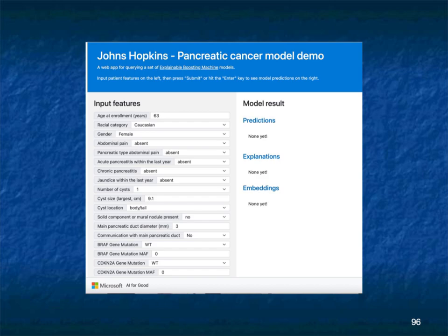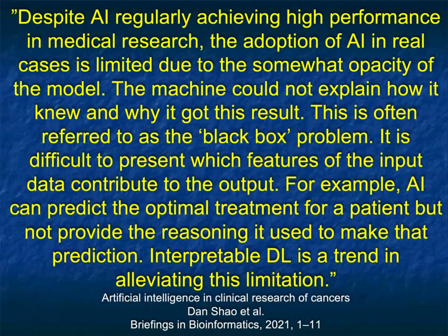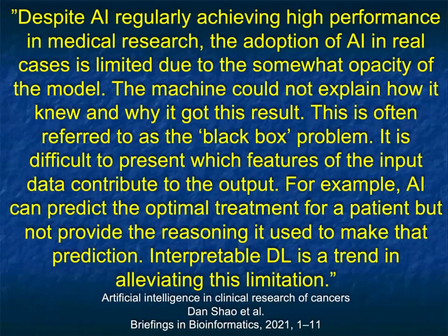Looking at fluid, we will be able to be more and more accurate — it's very exciting. We're looking at this and hopefully it will be the next step, building on the radiomics, building on the AI. This glass box technique — EBMs — may be the next great step in allowing us to really put AI into clinical practice. Despite AI regularly achieving high performance in medical research, the adoption of AI in real cases is limited somewhat by the opacity of the model: the machine cannot explain how or why it got the results, which is often referred to as the black box problem. By using a glass box, people are going to feel more comfortable using the technique.